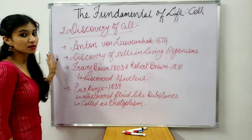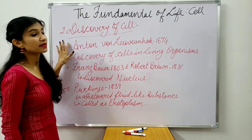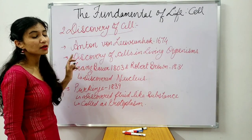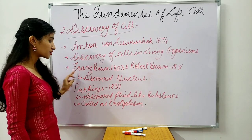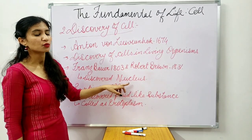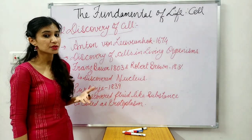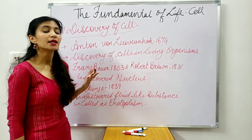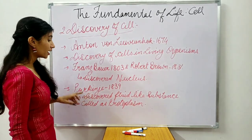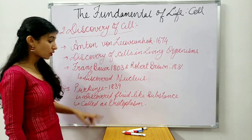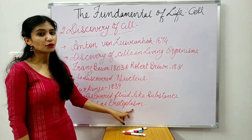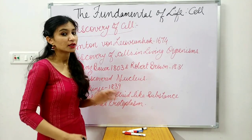So to recap what we have covered in the discovery of cell: Robert Hooke discovered the cell in 1665 in the dead part of a plant called cork. Anton van Leeuwenhoek discovered cells in living organisms in pond water in 1674. Franz Bauer in 1803 and Robert Brown in 1831 discovered the nucleus. In 1839, Purkinje discovered a fluid-like substance inside the cell and called it protoplasm, which we now know as cytoplasm.